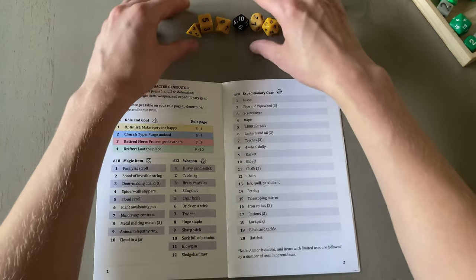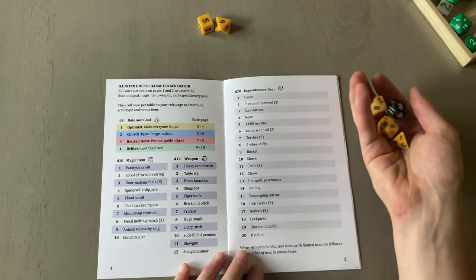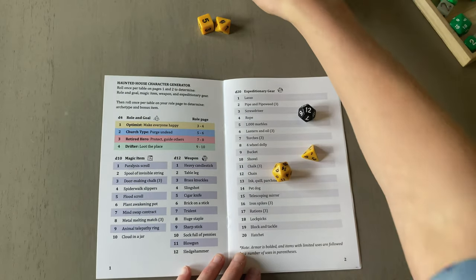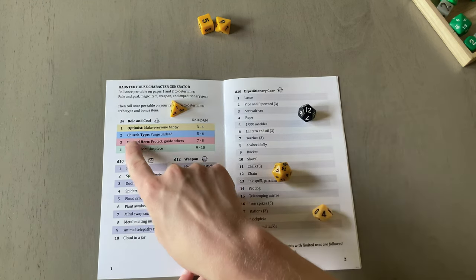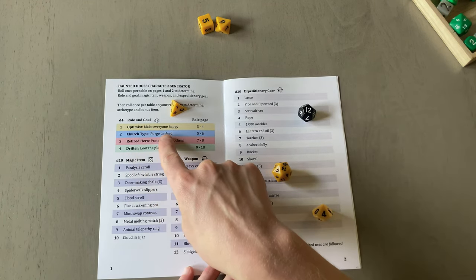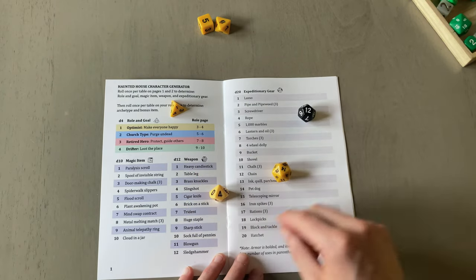First we'll roll each of these four types of dice and come up with a character. All right. I'm an optimist. That's my role and my goal. Make everyone happy, kind of like real life-ish. My weapon, a slingshot.